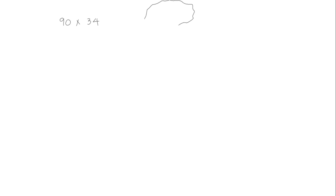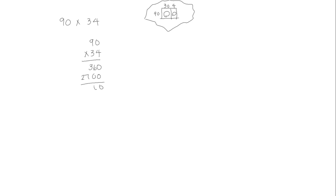Let's look at another one: 90 times 34. This time we're just going to visualize our area model instead of actually drawing it — we're just going to think in our head what the area model would look like. We'll start by writing our problem in vertical form. We multiply 90 times 4, which would be 360. Then we think of our second rectangle, which is 90 times 30 — that would be 2,700. Then we add them together to get a total product of 3,060.